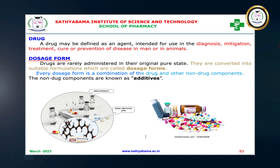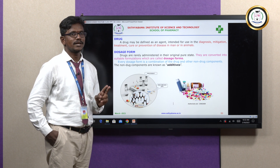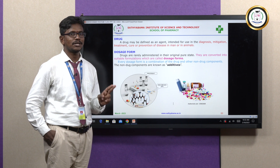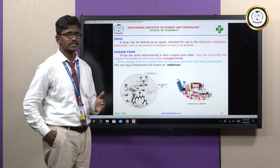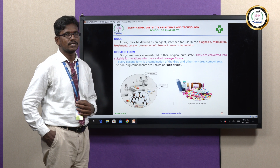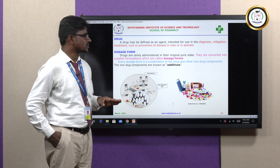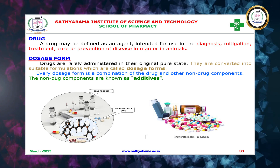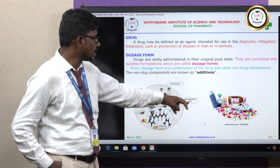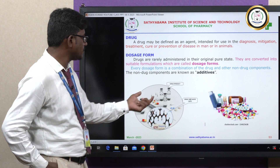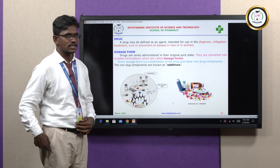Every dosage form is a combination of a drug and other non-drug components. Every dosage form has two components: one is the API — API stands for Active Pharmaceutical Ingredient, also called the drug substance — and along with the drug substance we need a non-drug component, which is nothing but an excipient. Without the excipient we cannot prepare a dosage form. The non-drug components are called additives. Here you can see a parenteral dosage form containing the API along with excipients, and various types of dosage forms are shown in the picture.